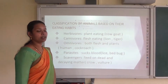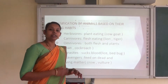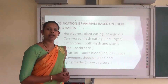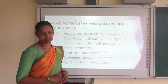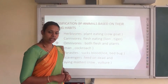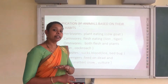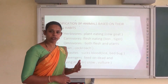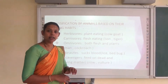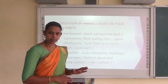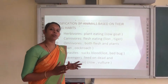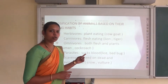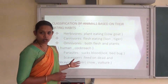Next we will see the classification of animals based on their eating habits. All animals eat different types of food items. So based on the type of food they are eating, we can group them into five main groups.